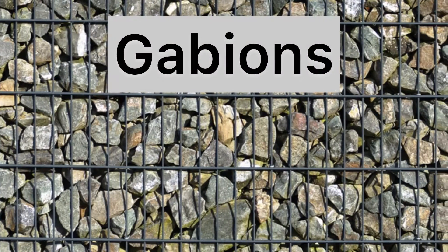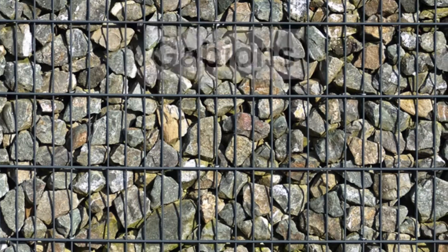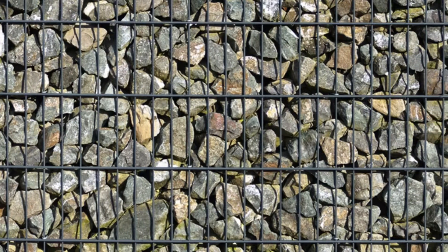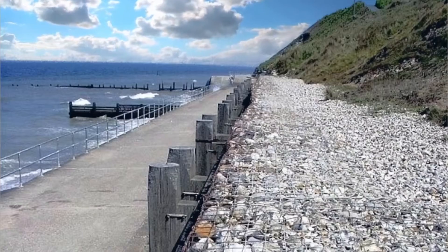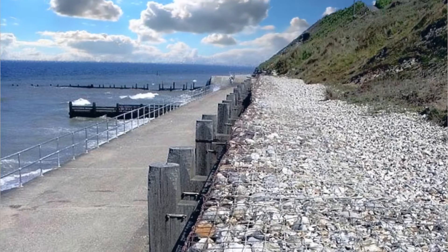Gabions are large wire cages filled with rocks that can be built up to support a cliff or provide a buffer against the energy of the waves.